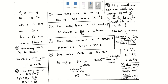Number six is pretty easy: how many meters in 280 centimeters? We know one meter equals 100 centimeters, so to convert from centimeters to meters, divide by 100. That gives 280 divided by 100, which is 2.80 meters.